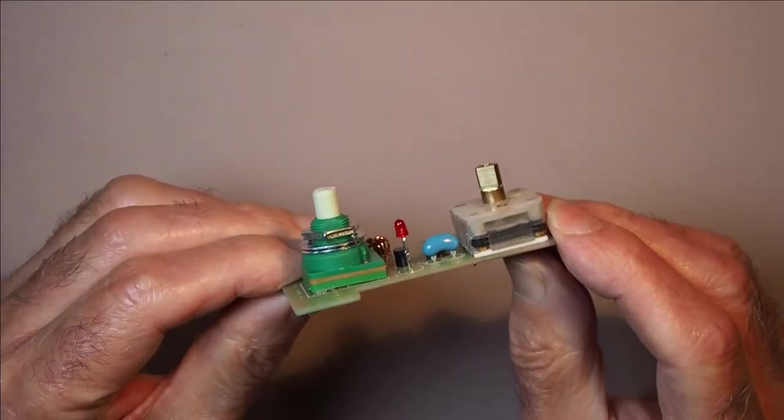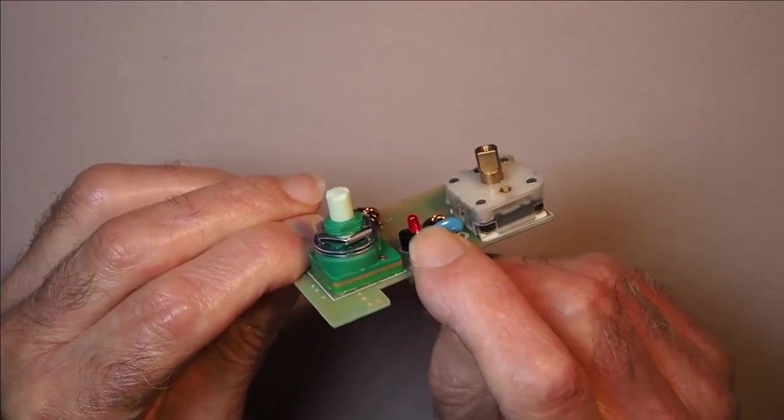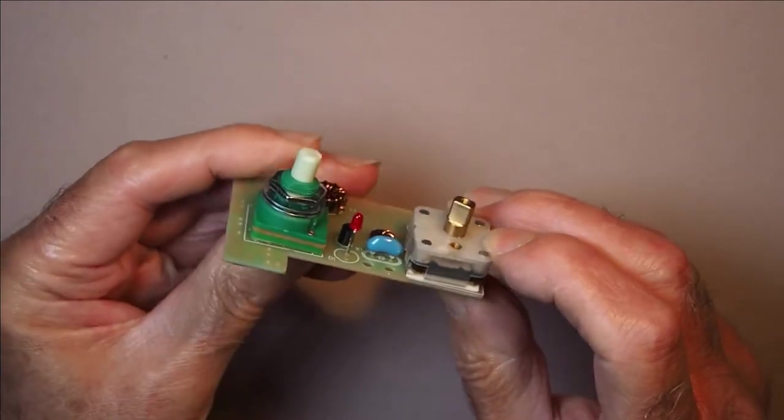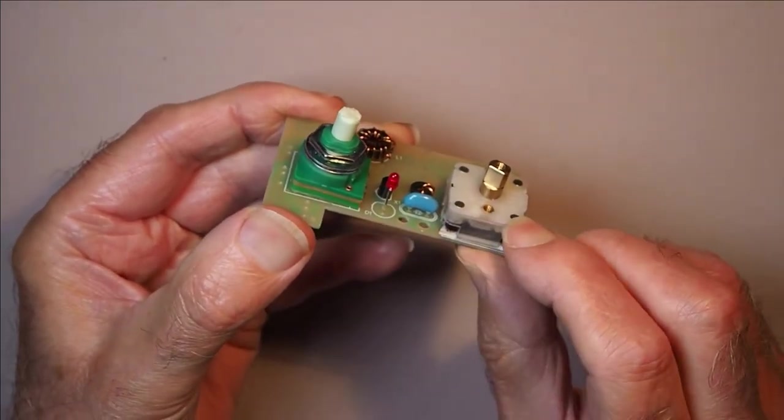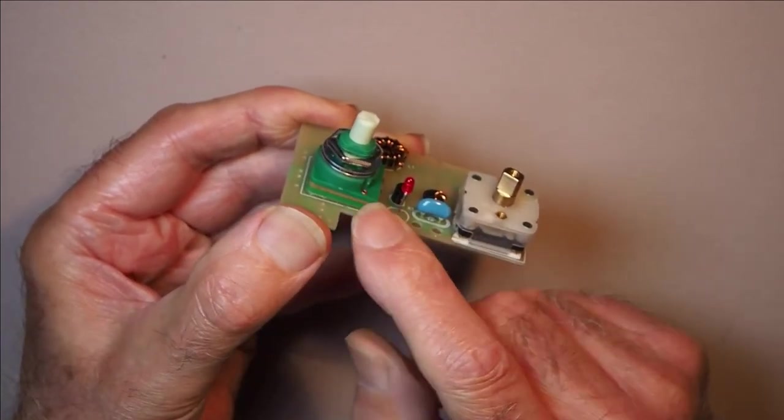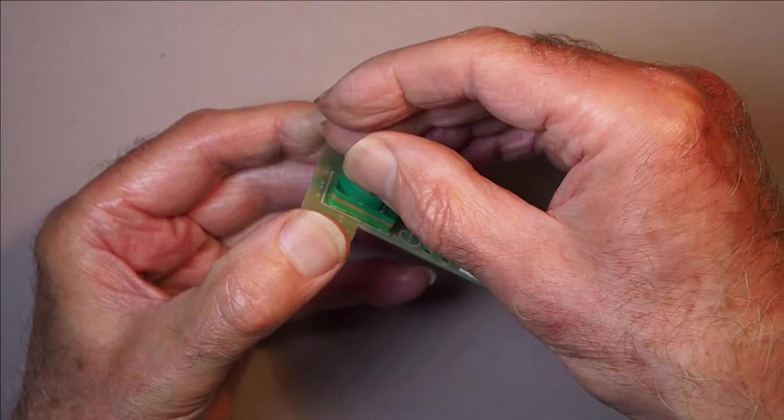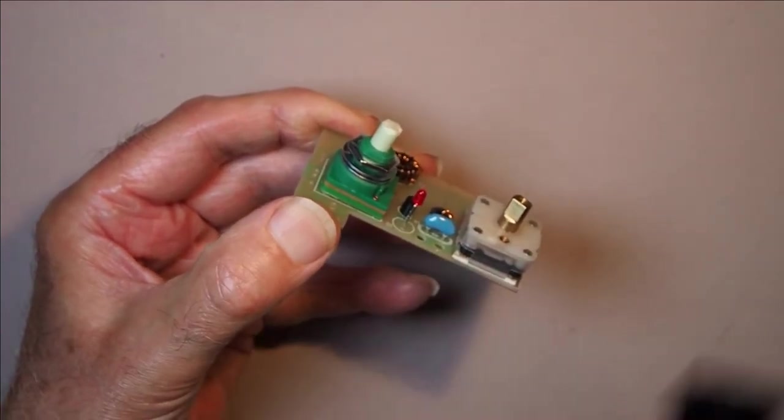Now the LED here, its position or height you can determine from the height of the body of either the variable capacitor or the pot, whichever is the greater. So you can see here how we determine the height of the LED.